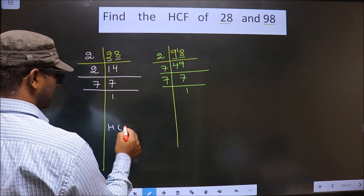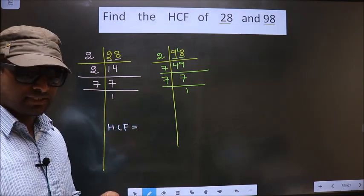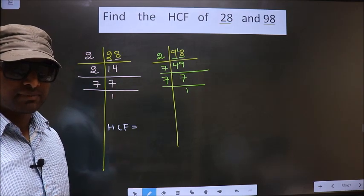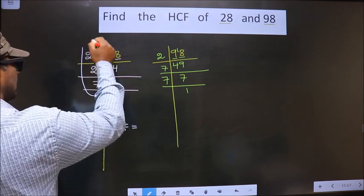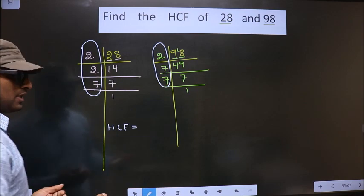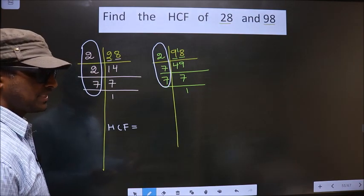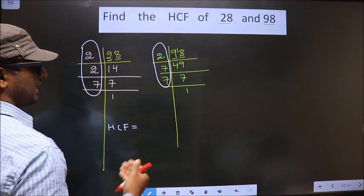Now our HCF is, HCF is the product of numbers that are present here and also here. So now we should find the numbers that are present in these two places.